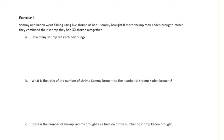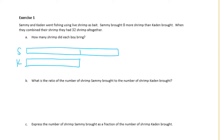Exercise 1: Sammy and Kaden went fishing using live shrimp as bait. Sammy brought eight more shrimp than Kaden. When they combined their shrimp they had 32 together. This looks like a good problem for a tape diagram. Kaden's portion is one section, and Sammy's is that same section plus eight more, with the entire tape equaling 32.